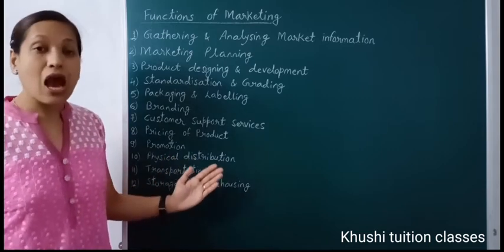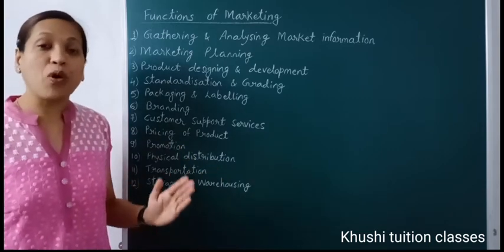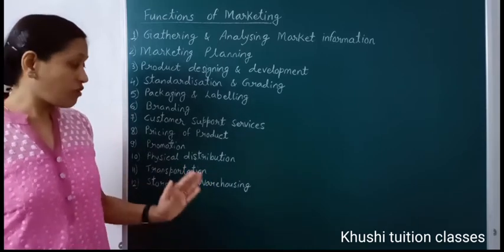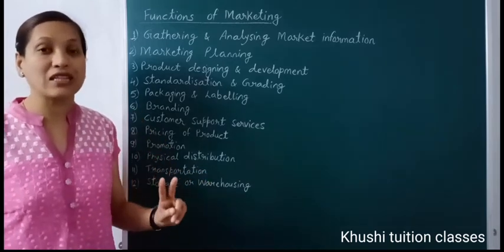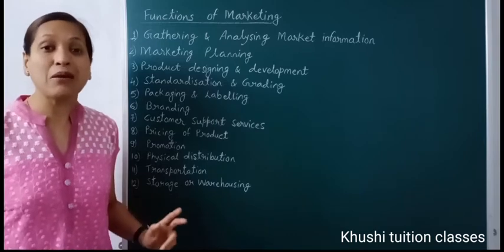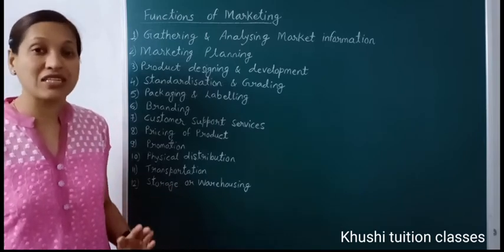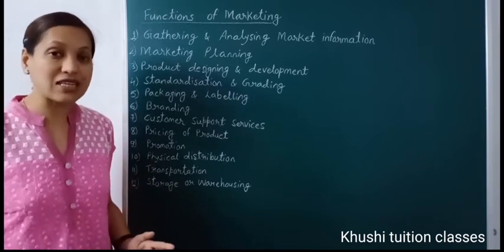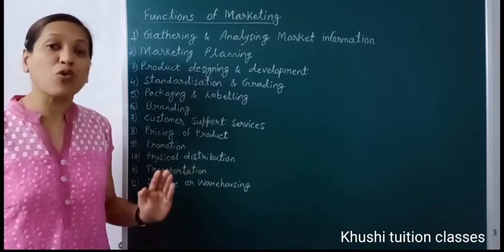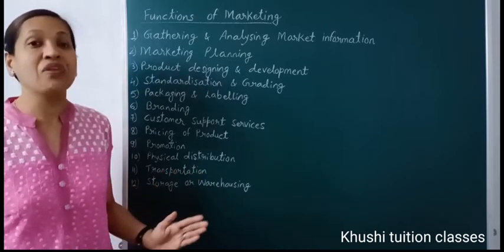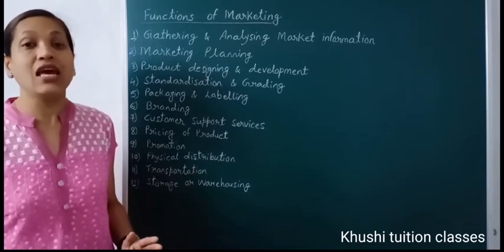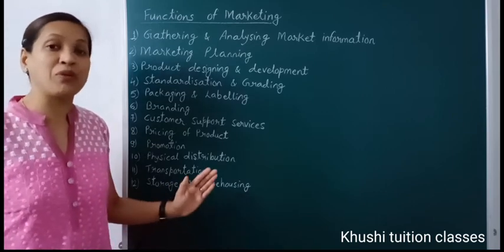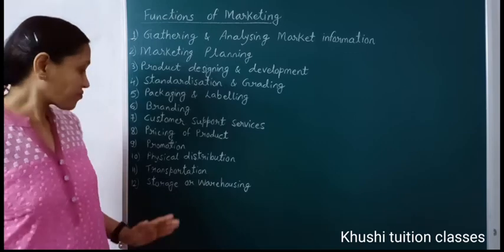The tenth function is physical distribution. Production alone is not important — we also need to distribute our product. Physical distribution includes two important things: channels of distribution, which are intermediaries such as agents, wholesalers, retailers, and company showrooms through which the product reaches the consumer. For this distribution, services like transportation, warehousing, order processing, and inventory control are used.